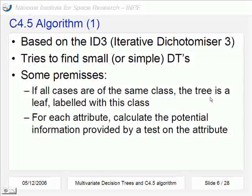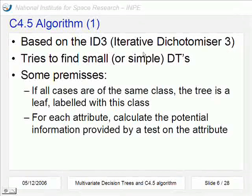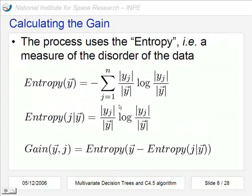Now, we are going to talk about this C4.5 algorithm that is based on a previous algorithm, ID3, that means Iterative Dichotomizer 3. The aim is to find small or simple decision trees, based on some premises, that if all cases belong to the same class, at this point the tree is a leaf and we label it with that class. And for each attribute we calculate the potential information provided by a test, executing a test on this attribute.